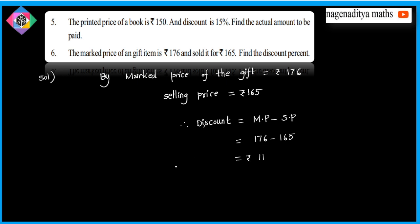Percentage of discount is equal to discount divided by market price (MP) into 100.